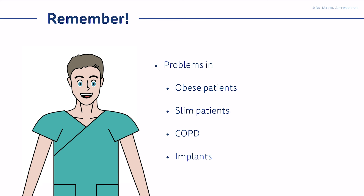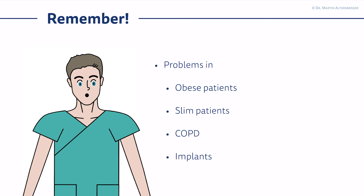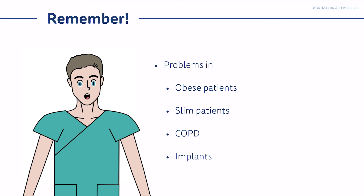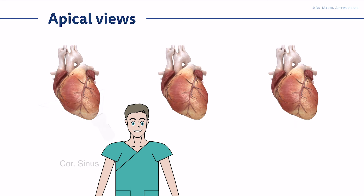There are some challenges. When a patient is severely obese or slim, it can be hard to find an optimal view. You can use contrast in those patients to optimize image quality. In COPD patients it can sometimes be hard to get parasternal or apical views. And in case of breast implants, they can sometimes be directly in your field of view, making it harder to scan those patients.